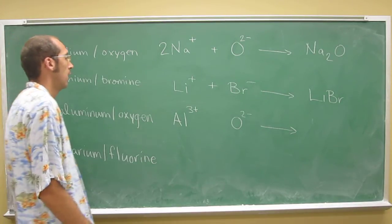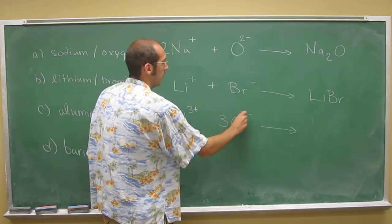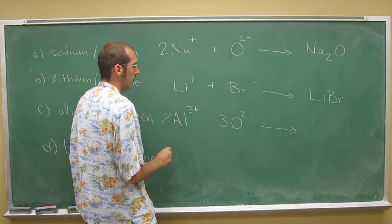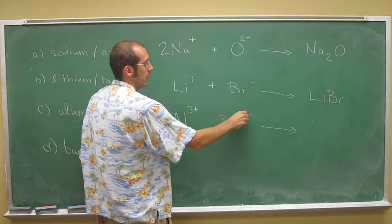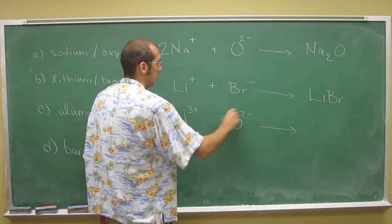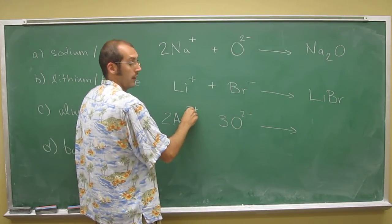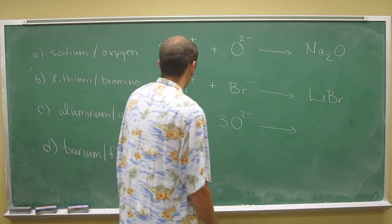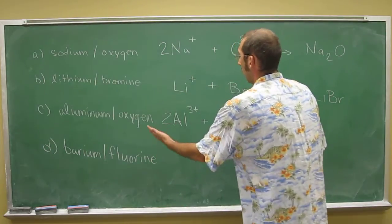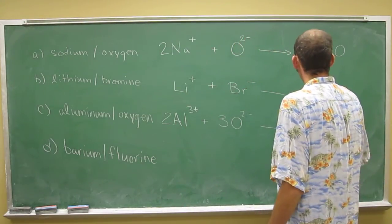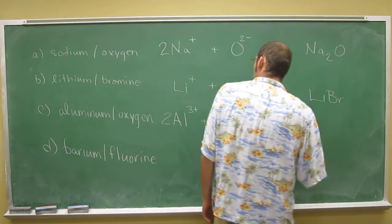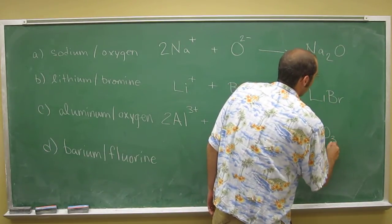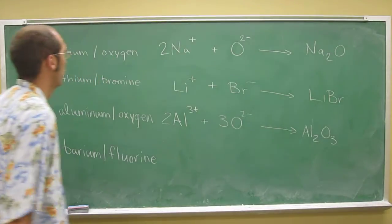What you can do is do 3 2's and 2 3's, and that would equal 6. So 3 times negative 2 is negative 6, and 2 times positive 3 is positive 6. And those cancel each other out, 6 and negative 6. So you don't write it like this together, but you write it with subscripts. So it's going to be Al₂O₃ is the formula unit for the compound that's made by combining aluminum and oxygen.